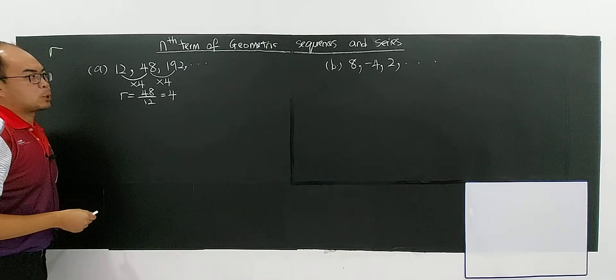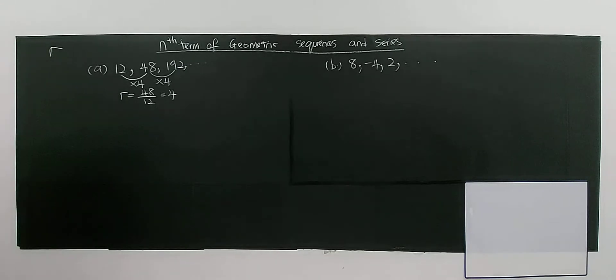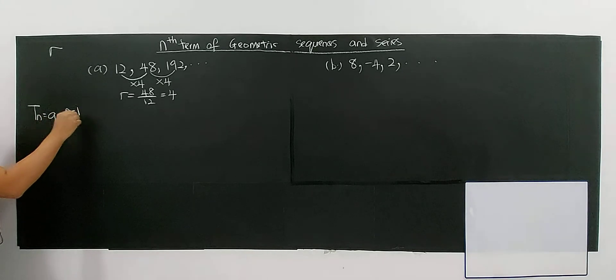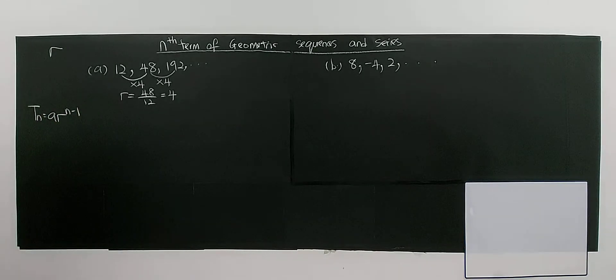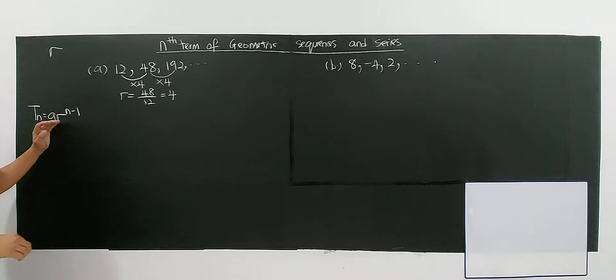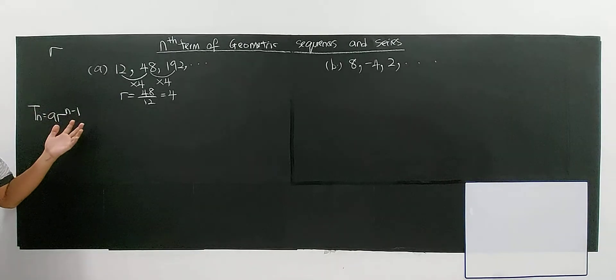So then the question asks you to find the n-term. The formula for n-term for a geometric sequence is a times r power of n-1. So I have derived for you in the previous video. So you have to see the derivation so that you understand better why we apply this formula.